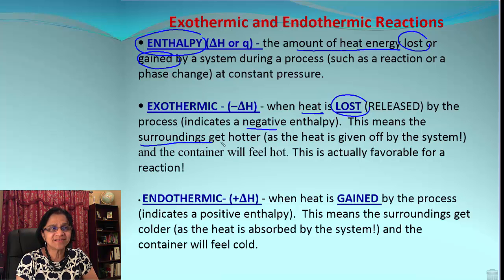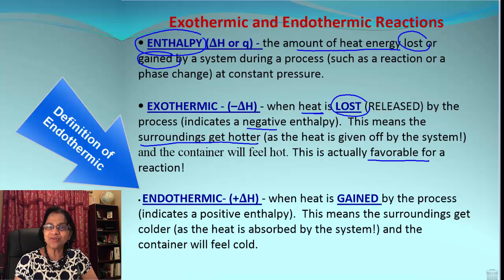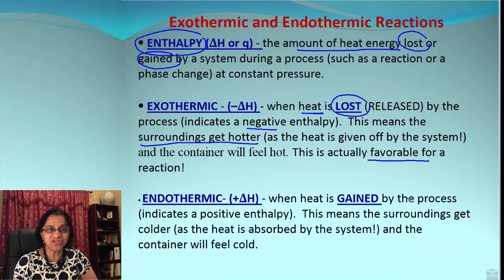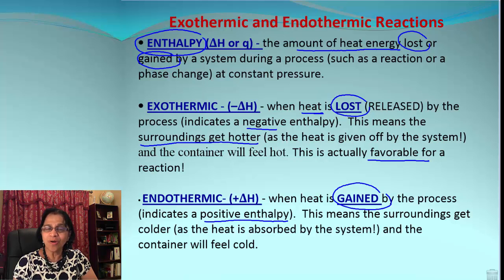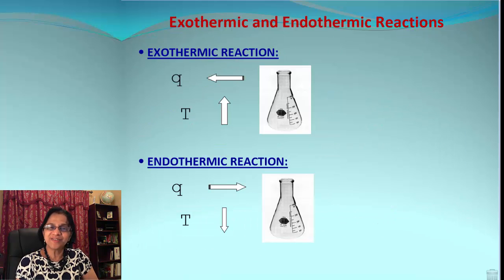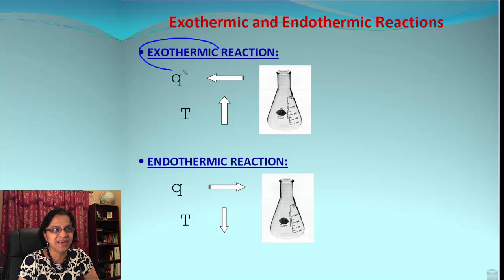In an exothermic reaction, heat is given up by the system, so the surroundings get hotter. Exothermic reactions are always favorable. Endothermic is exactly opposite — energy is gained during the process, so delta H will be a positive value. The surroundings will get colder because heat is gained by the system and the container will actually feel cold.